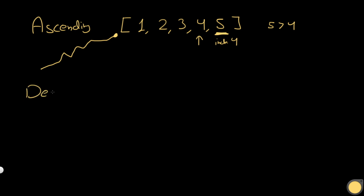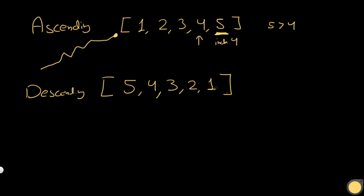Now we have another edge case — when we have descending values. Let's take the same example but in reverse: 5, 4, 3, 2, 1. In this case, the peak is going to be 5, at index 0, so we return 0. The reason is that the only neighbor of 5 is 4, and 5 is greater than 4. So 5 is the only peak that exists in this case.